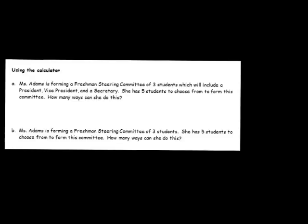I want to use the previous example to show you how you would compute some of these things on the calculator. Using the first example where we had Ms. Adams choosing a president, a vice president, and a secretary, we saw that the answer was 5 times 4 times 3. Now that can be done in our head, but there are certain problems where it won't always be quite so simple, so using the calculator would become necessary.